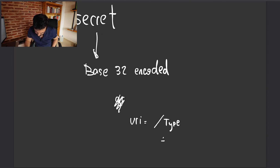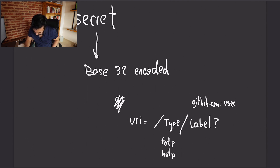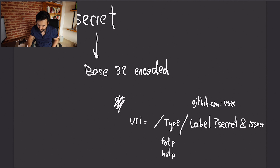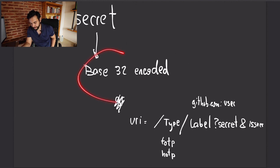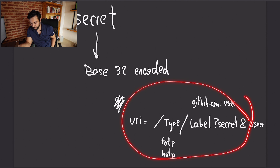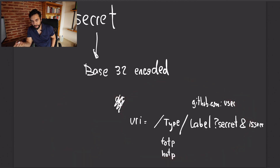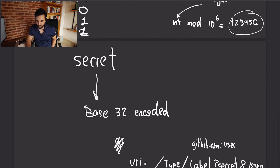The URI has a type — TOTP or HOTP — a label like 'github.com' and your user, and parameters including the secret, issuer, and algorithm settings. Usually when you're on your phone, GitHub or the provider generates a QR code out of this URI, you scan it, and your authenticator app extracts the secret and follows the flow we described.